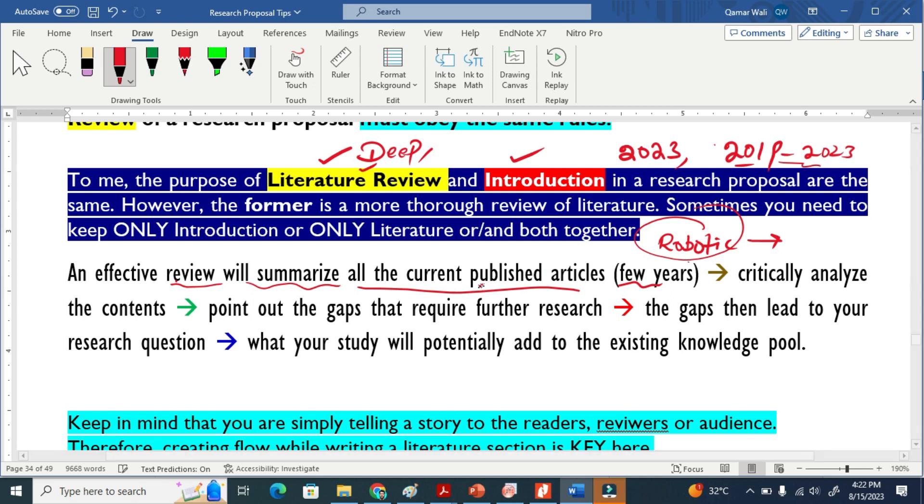Once we have those papers in hand, we have to critically analyze the content. This means that we have to look deep at what they are basically talking. From that study, from those contents, we will point out the gap, the issue, the challenges. Once we have that challenge in our hand, this means that we find the gap. So now we can define objectives and put research questions.